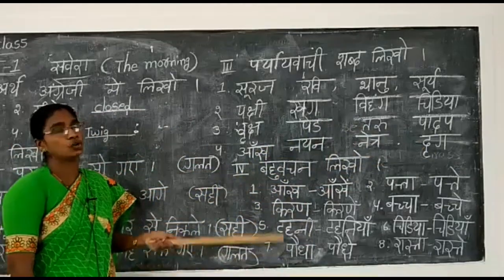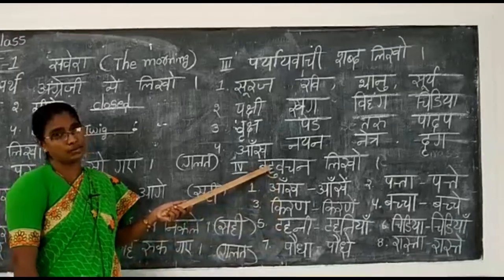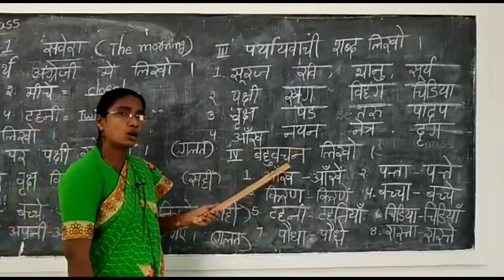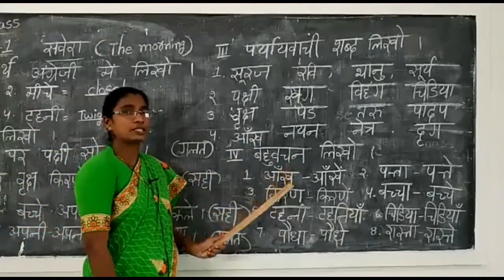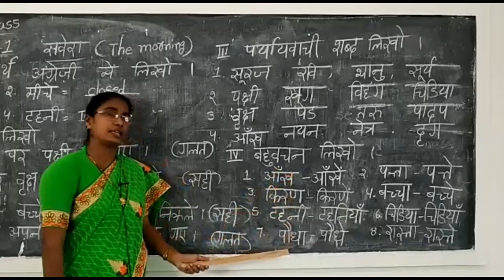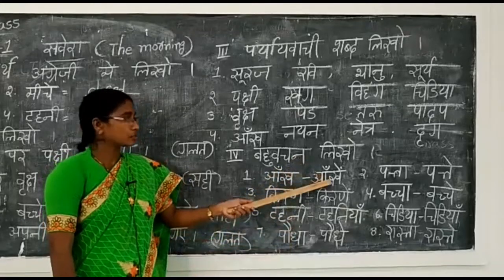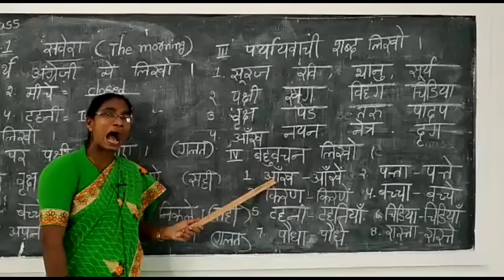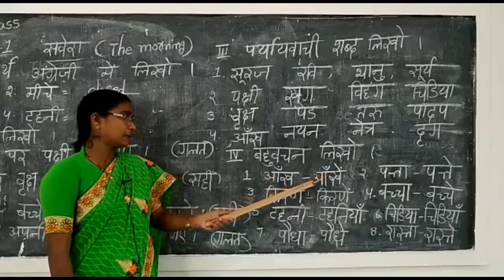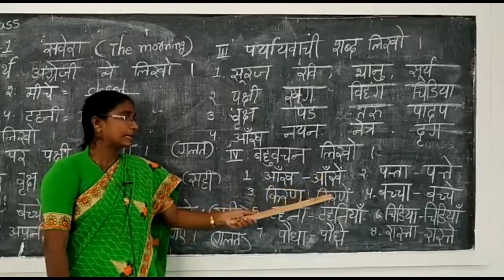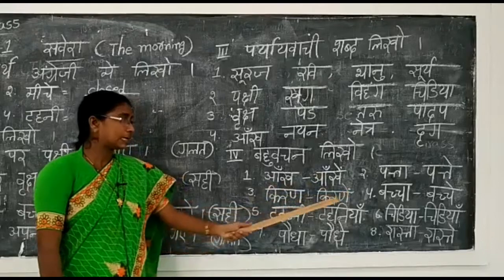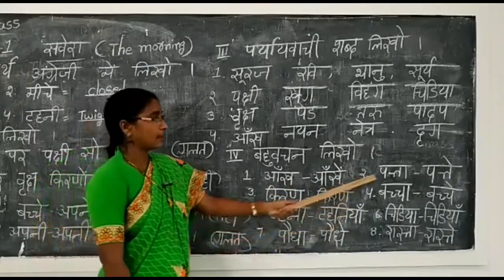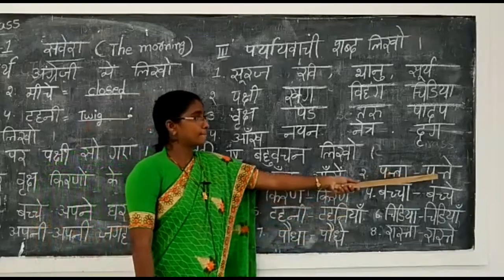Next exercise: 'Bahu vachan likho' - write plurals. Bahu vachan means plural; in Telugu we say 'bahuvachanam'. In Hindi, ek vachan is singular and bahu vachan is plural. Singular words are given; we change them to plurals. Aankh becomes Aankhen. Kiran becomes Kiranem. Tahani becomes Tahaniya. Paudha becomes Paudhe. Patta becomes Patte.